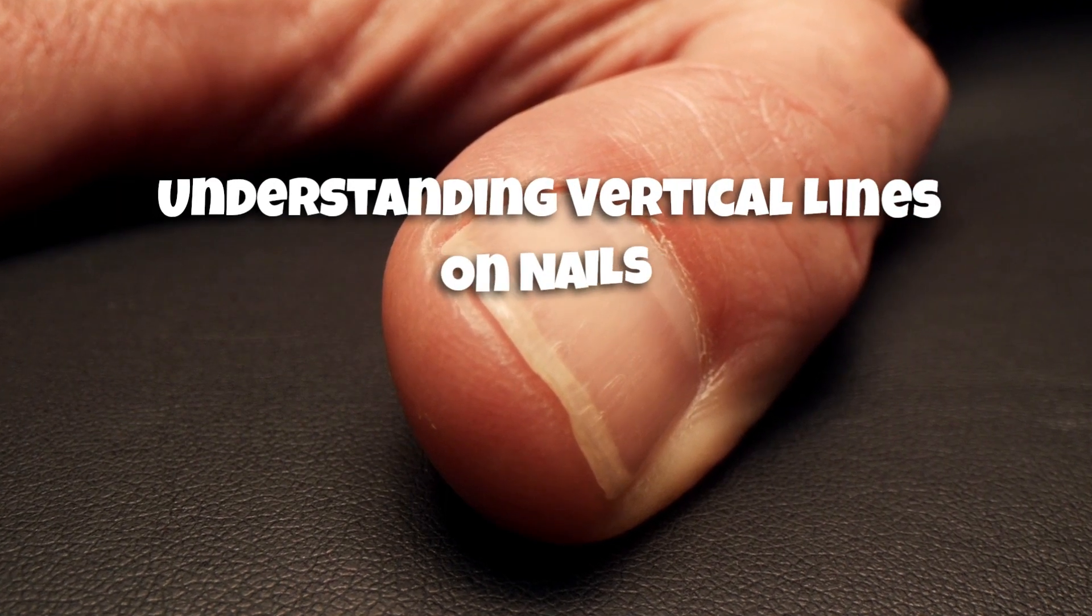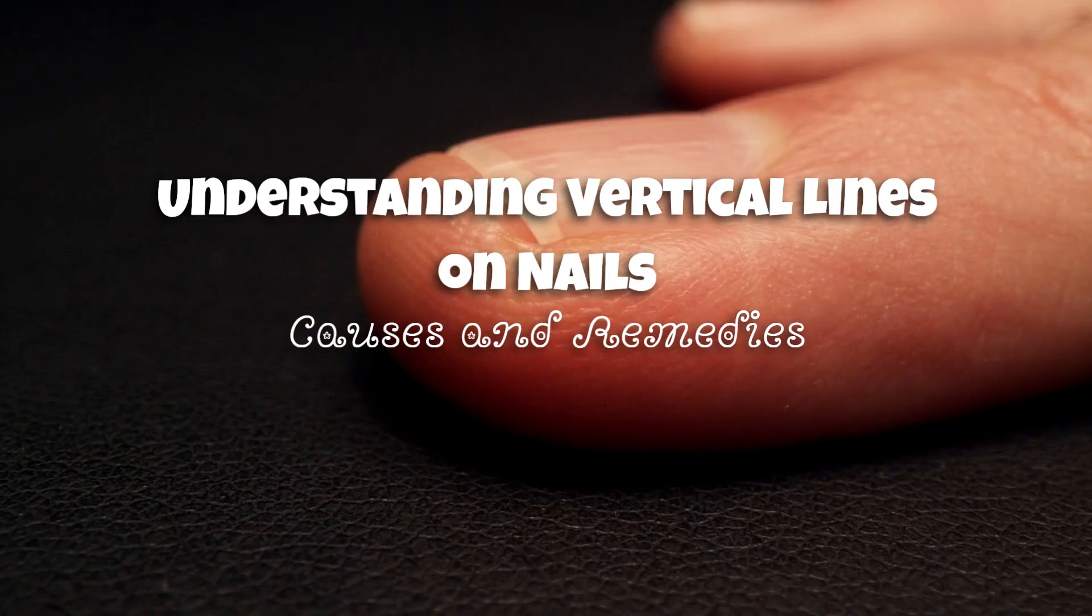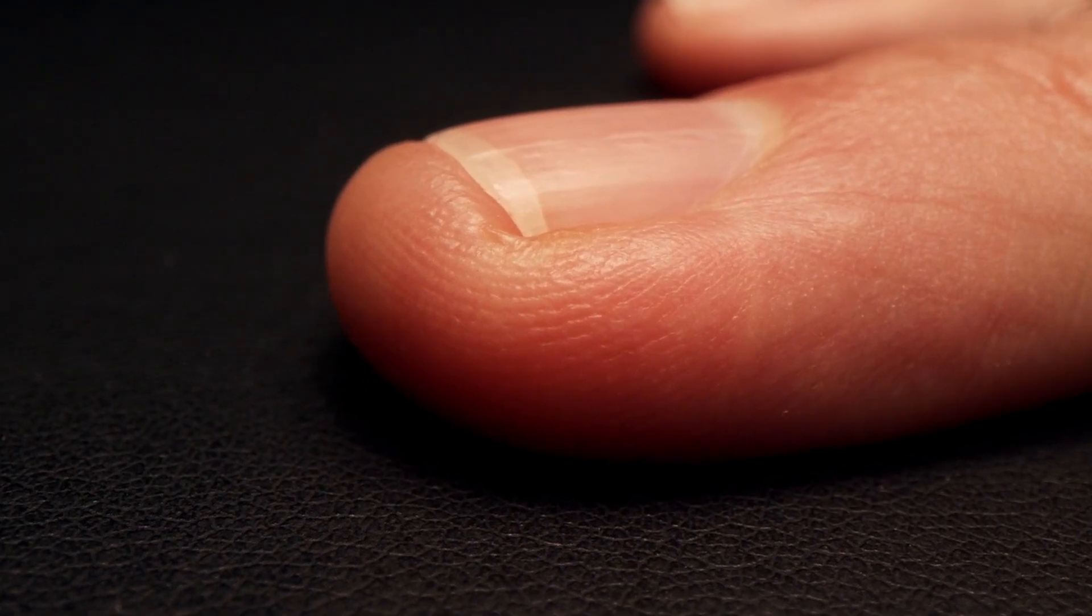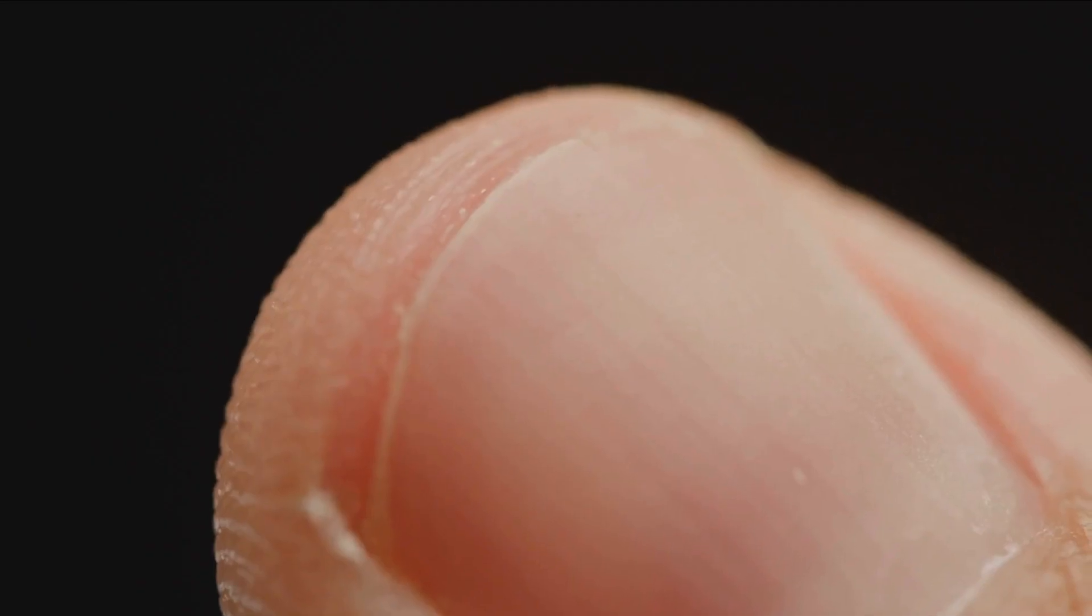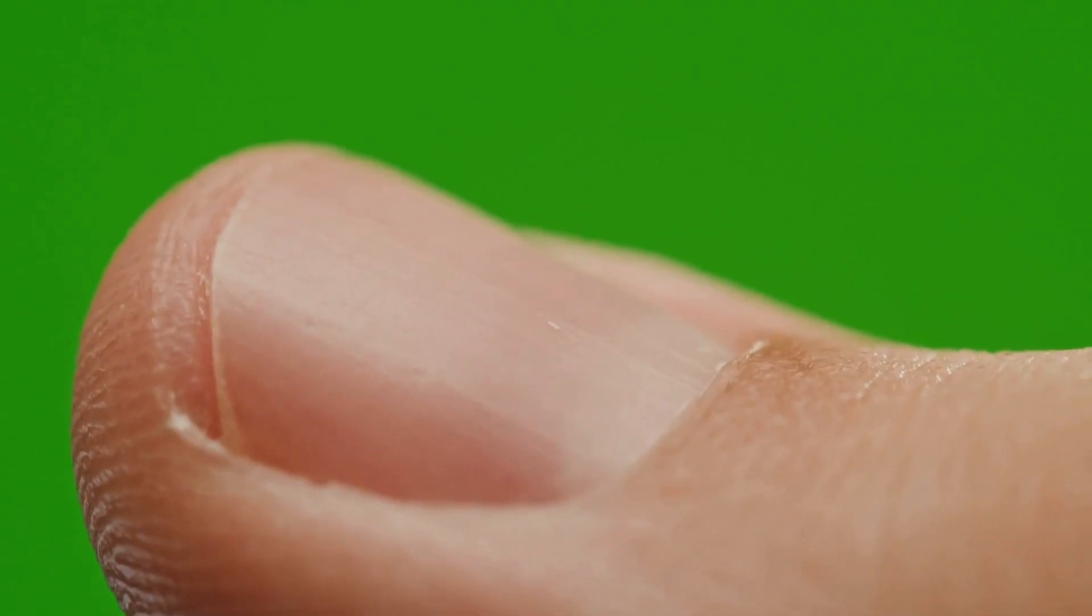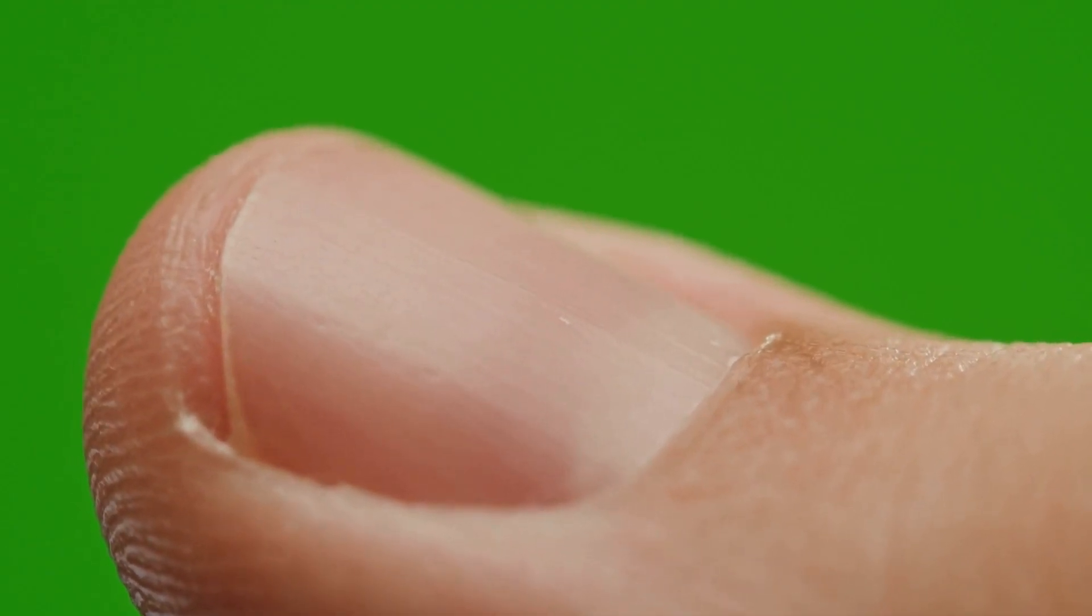Understanding vertical lines on nails: causes and remedies. Vertical lines on nails, also known as nail ridges, can be a source of concern for many individuals. They can appear as thin or thick lines running vertically along the nail plate. While they are often harmless, they can sometimes indicate underlying health issues.